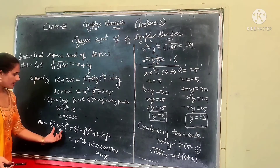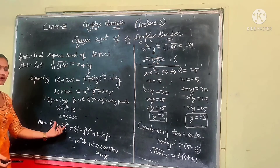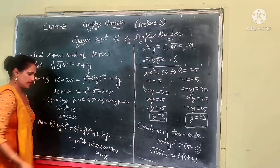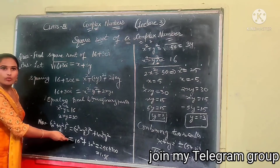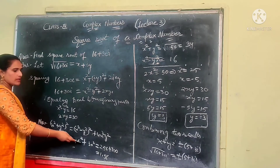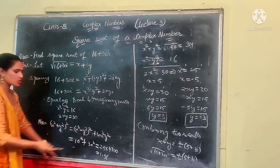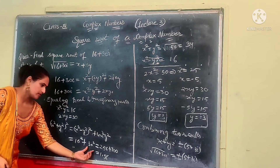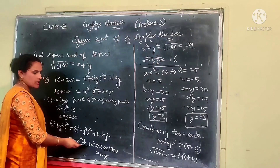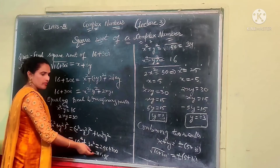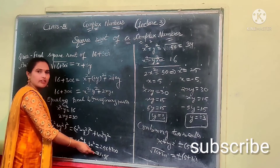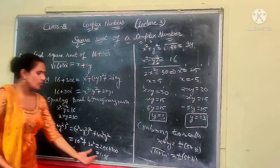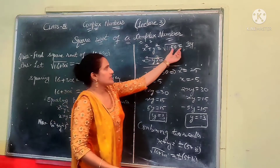According to the formula, (x squared plus y squared) squared equals (x squared minus y squared) squared plus 4x squared y squared. Substituting, we get 16 squared plus 30 squared, which is 256 plus 900 equals 1156. Therefore, x squared plus y squared equals the square root of 1156, which equals 34.